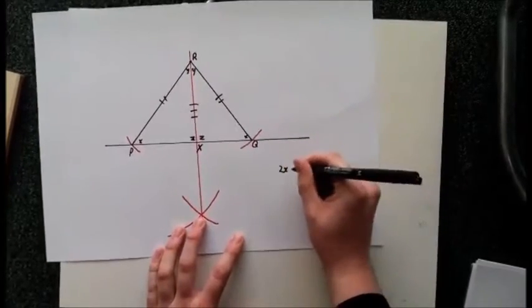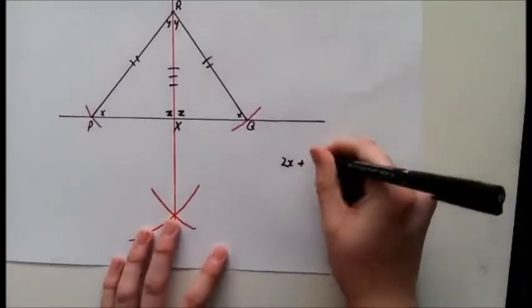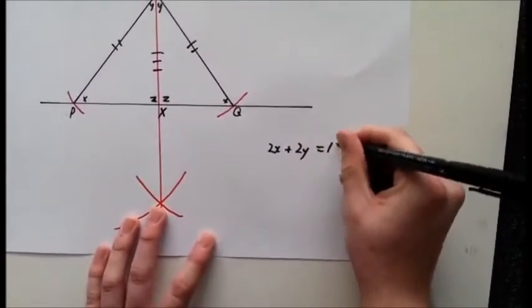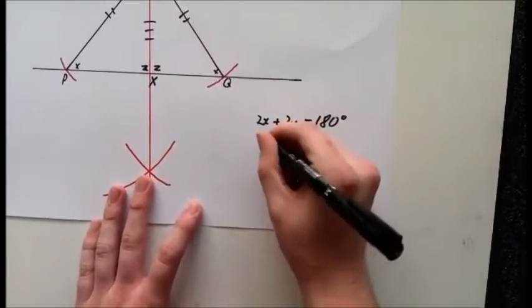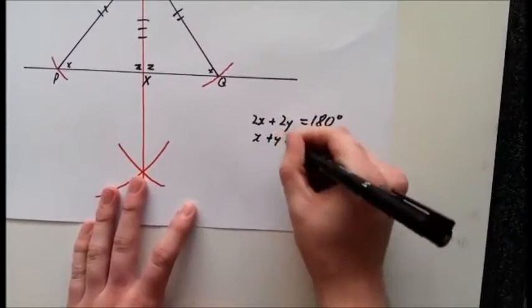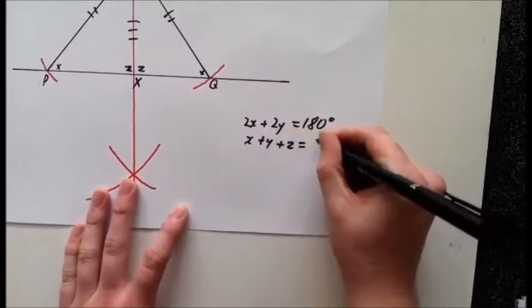2X + 2Y = 180 degrees. And in the small triangle, X + Y + Z = 180 degrees.